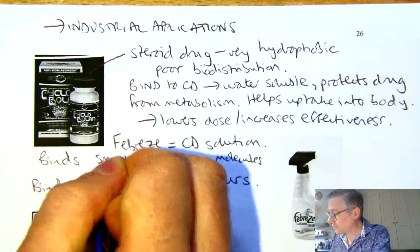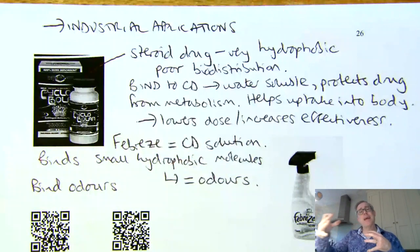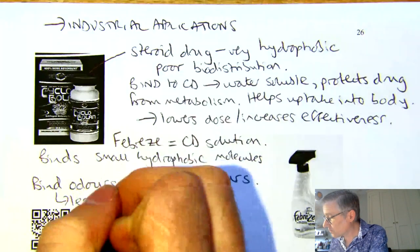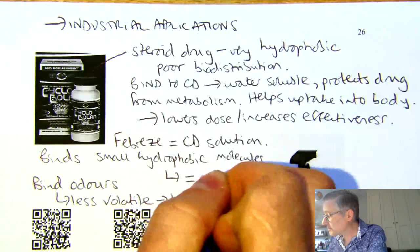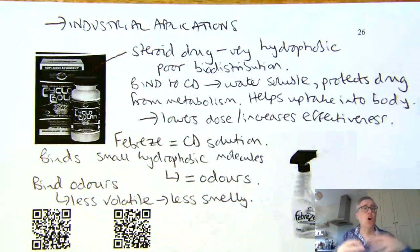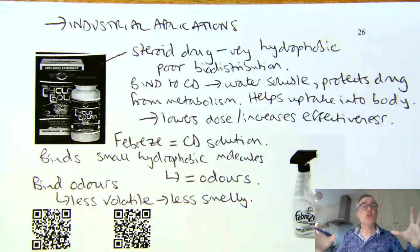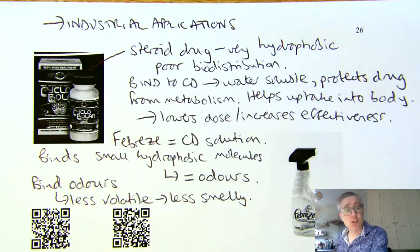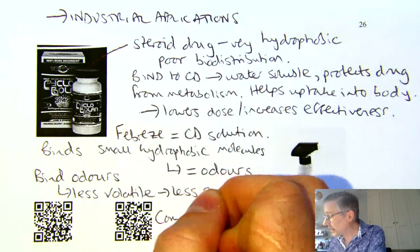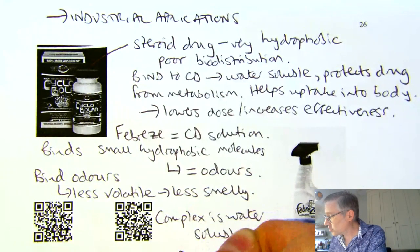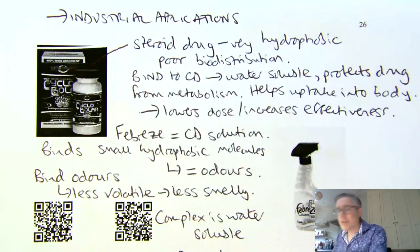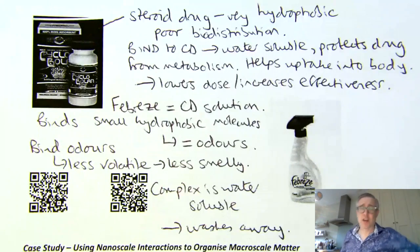So you bind odours with the cyclodextrin. When you do that, you increase the apparent molecular weight of the odour because it's now in a complex. If it's in a complex, it's less volatile, and if something's less volatile it doesn't get to your nose as much, so it's less smelly. The odour hasn't gone away or been destroyed — you've bound it in a complex and trapped it. And that complex is water soluble, so it washes away.